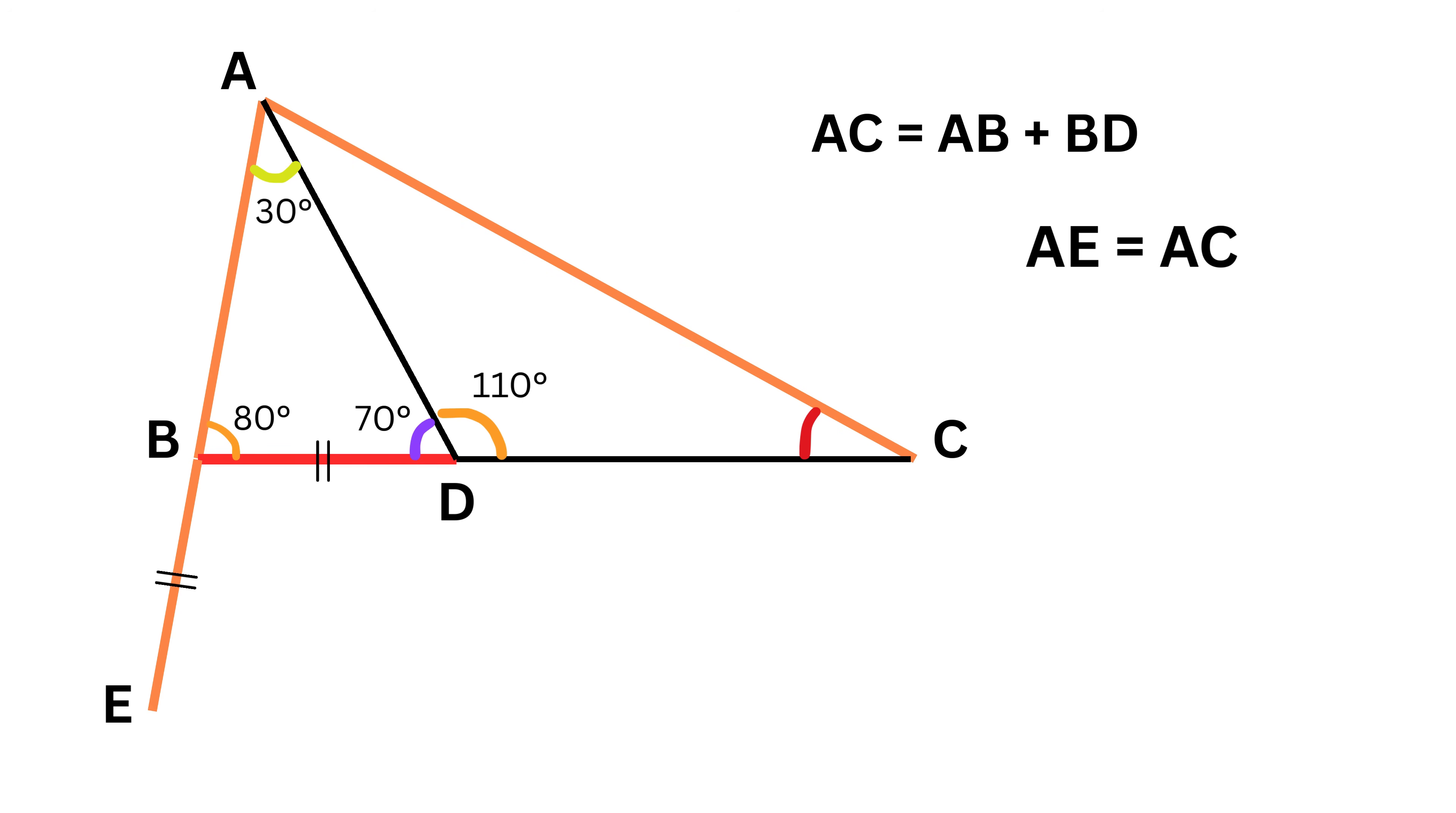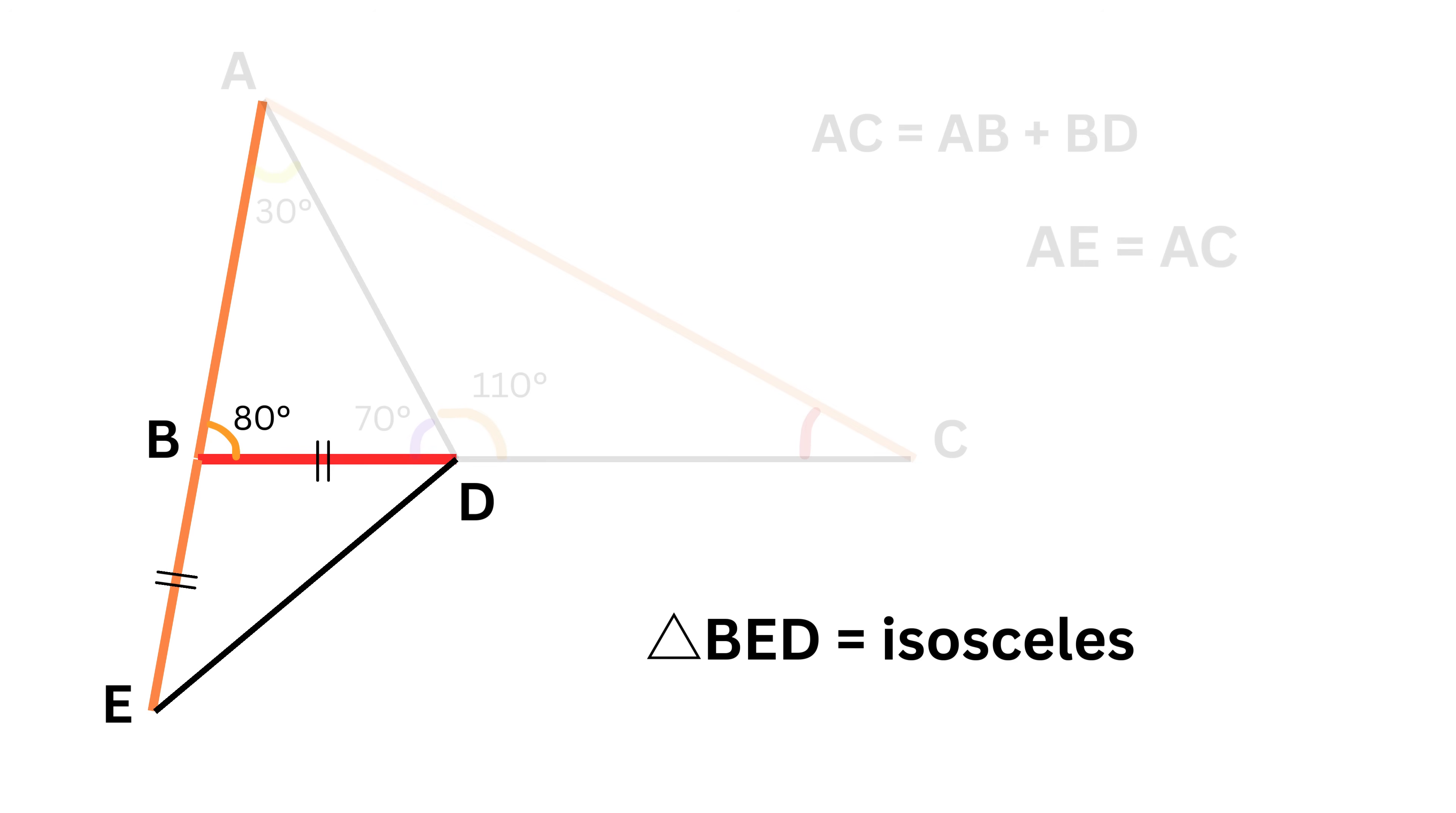Now connect these two points E and D to form an isosceles triangle BDE.